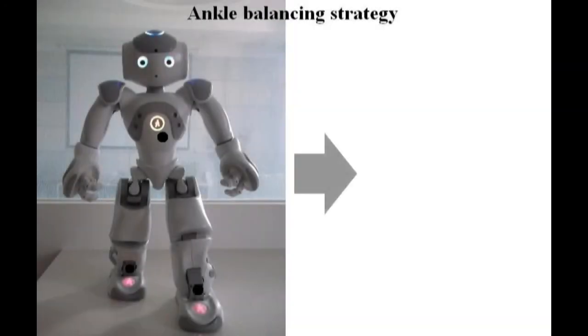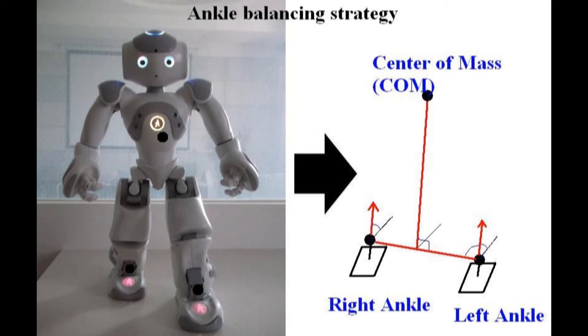In order to keep its balance, two balancing strategies are applied to its lower body. The first one is called ankle balancing strategy. By controlling the ankle joints only, it constrains the projection of the center of mass inside the supporting polygon.